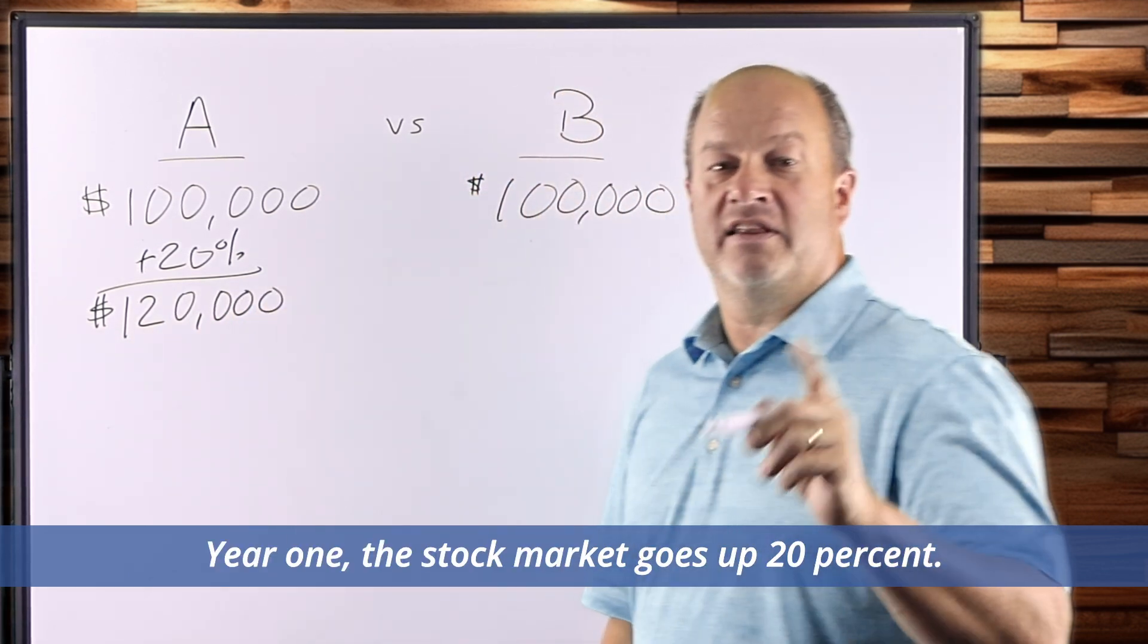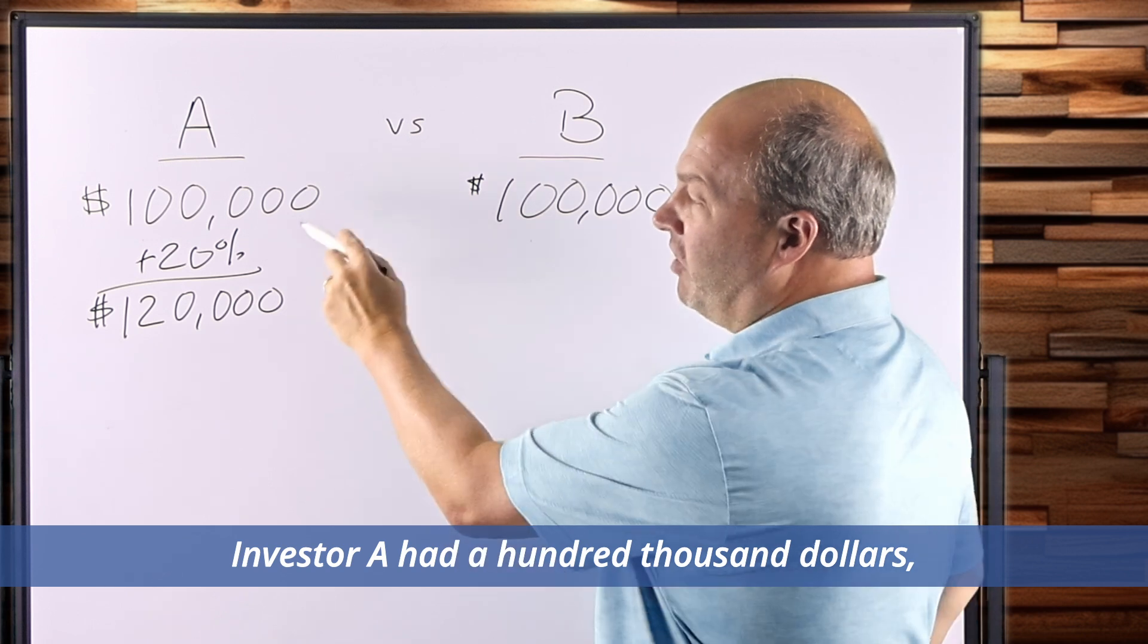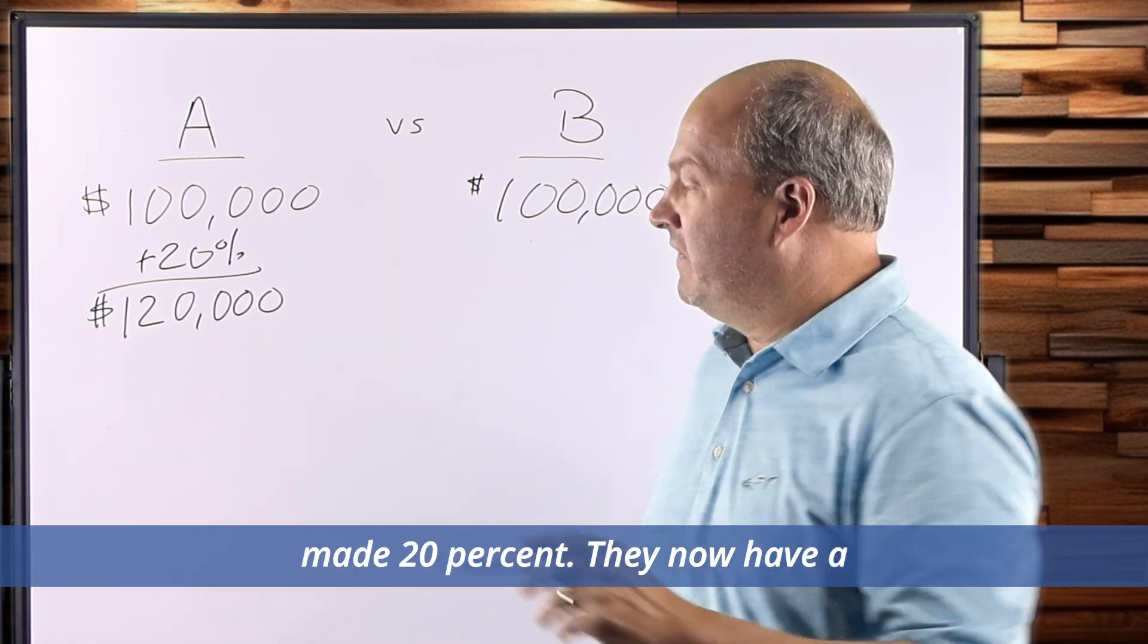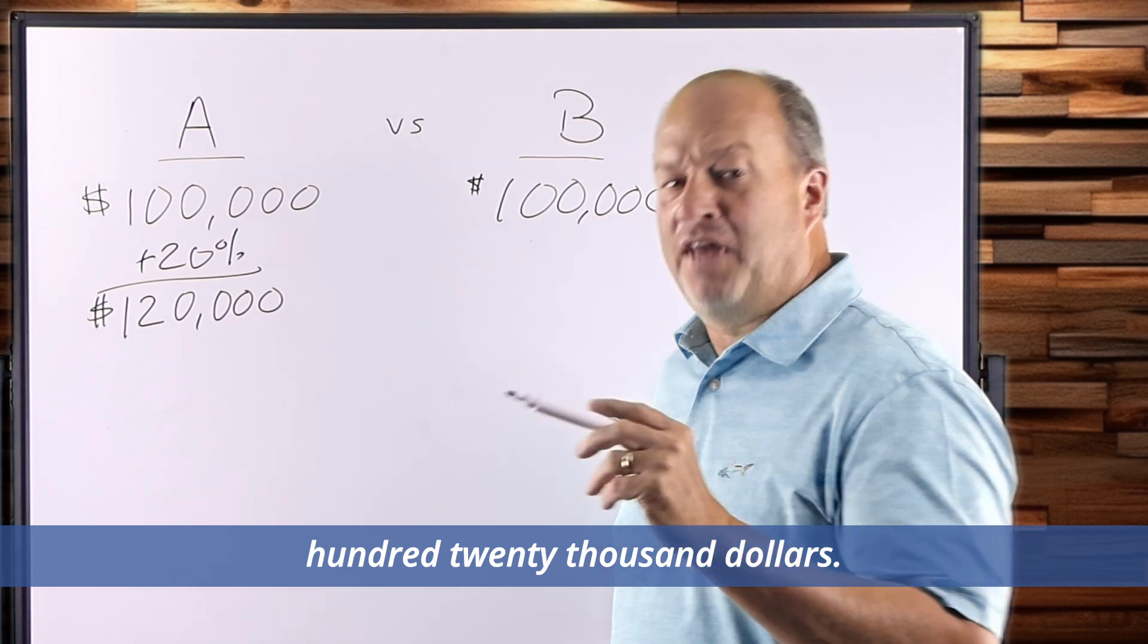Year one, the stock market goes up 20%. Investor A had $100,000, made 20%. They now have $120,000.